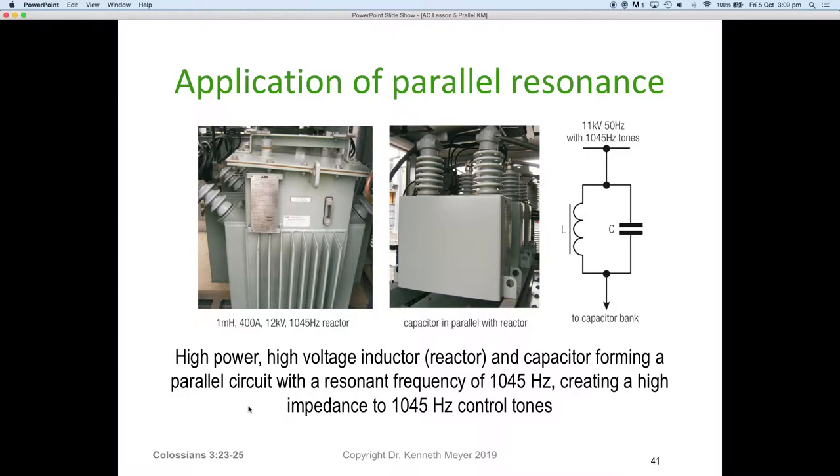So some of the applications for parallel resonance is to gain insertion of frequencies into the mains for control tones. You can see here pictures of capacitors in parallel with reactors. In this particular case, you've got a 1 millihenry inductor at 400 amps at 12 kV at a frequency of 1,045 hertz. Here's a picture of the circuit. It allows them to inject frequencies onto the mains. So high power, high voltage reactors and capacitors forming parallel circuits at resonant frequencies, creating high impedances at 1,045 hertz for those control tones, which turn on and off hot water services in a particular supply authority's network.